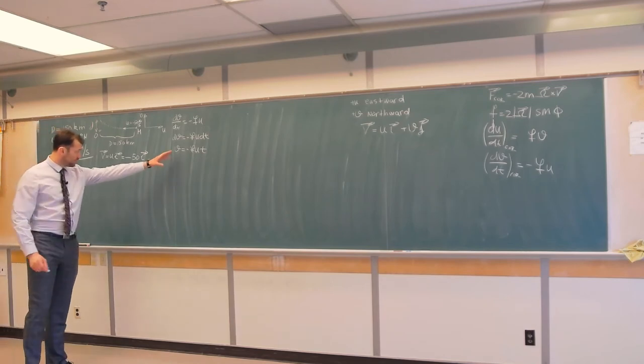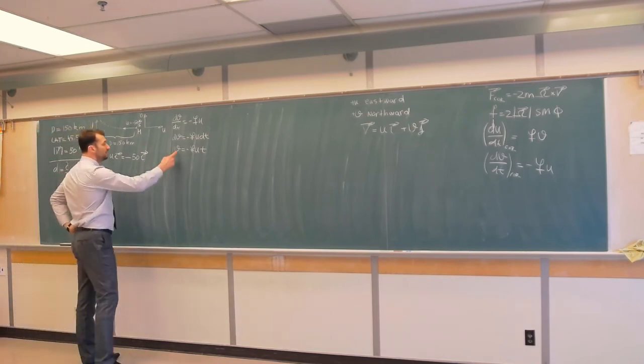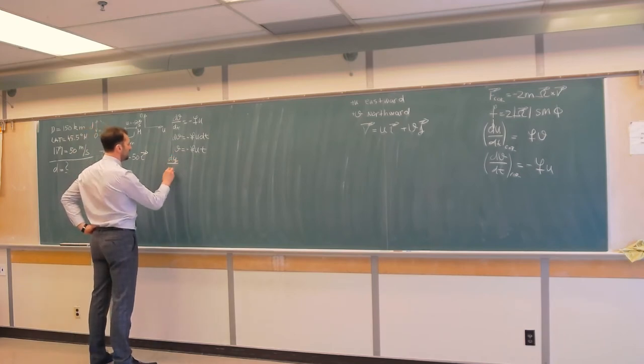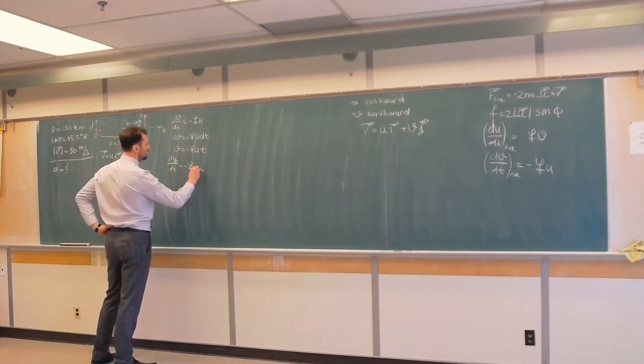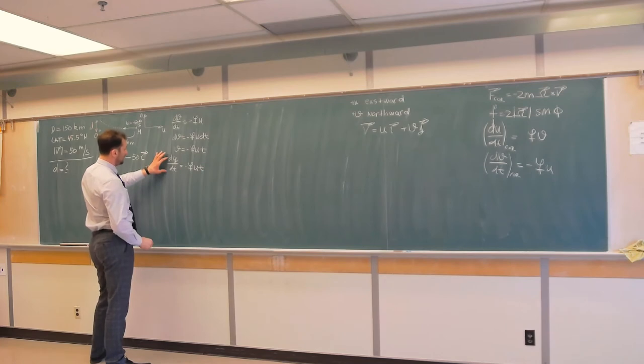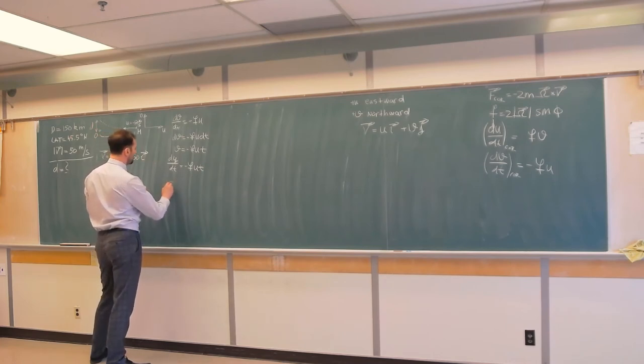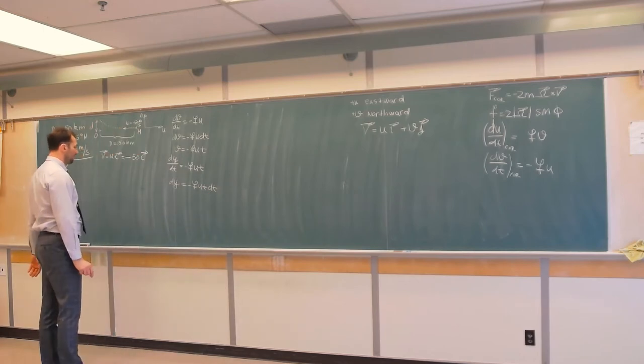But I don't need v, I need d. Well, v is dy/dt equals negative fu t. Or, again, this is a differential equation that separates variables, so I will get that dy is equal negative fu dt.